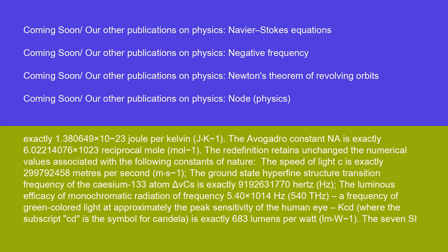The redefinition retains unchanged the numerical values associated with the following constants: the speed of light c = exactly 299,792,458 m·s⁻¹; the ground state hyperfine structure transition frequency of the cesium-133 atom Δν_Cs = exactly 9,192,631,770 Hz; and the luminous efficacy of monochromatic radiation of frequency 5.40×10¹⁴ Hz (540 THz) — a frequency of green-colored light at approximately the peak sensitivity of the human eye — K_cd = exactly 683 lumens per watt (lm·W⁻¹).